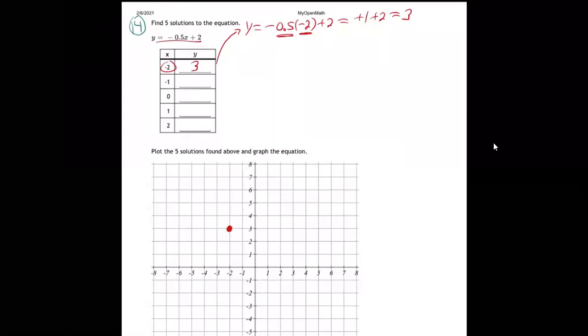So let's do it here: minus 2, 3. Now let's do the next one. Y equals negative 0.5, and I'm going to plug in negative 1 this time. And you get positive 0.5 plus 2, which is 2.5. So negative 1 up 2.5, so it'd be right there in the middle.